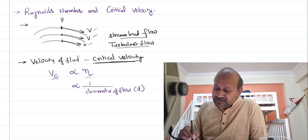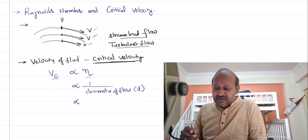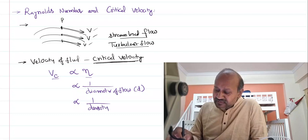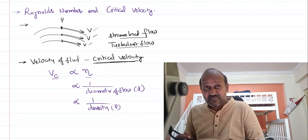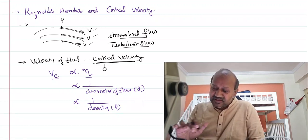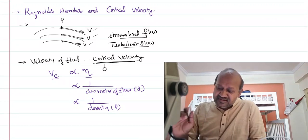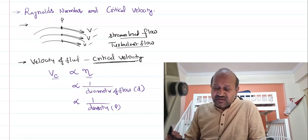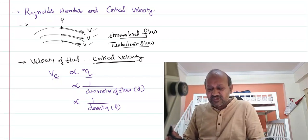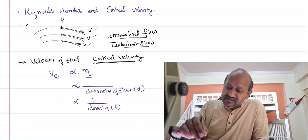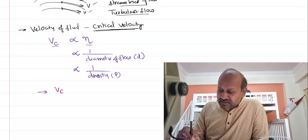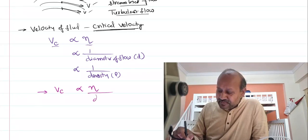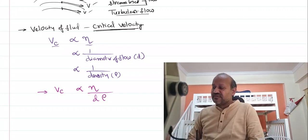Critical velocity is also inversely proportional to the density of the fluid — the more dense the fluid, the less the critical velocity, and vice versa. To summarize: more diameter → less critical velocity; more density → less critical velocity; more coefficient of viscosity → more critical velocity. Combining all these, critical velocity is directly proportional to coefficient of viscosity and inversely proportional to both the diameter and density of the fluid flow.